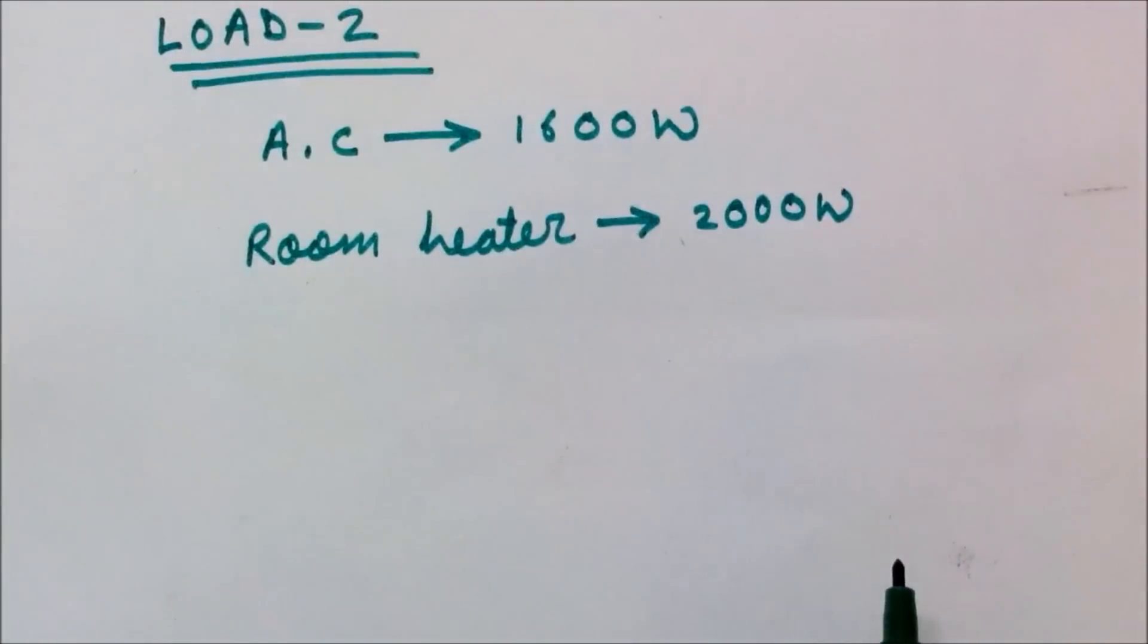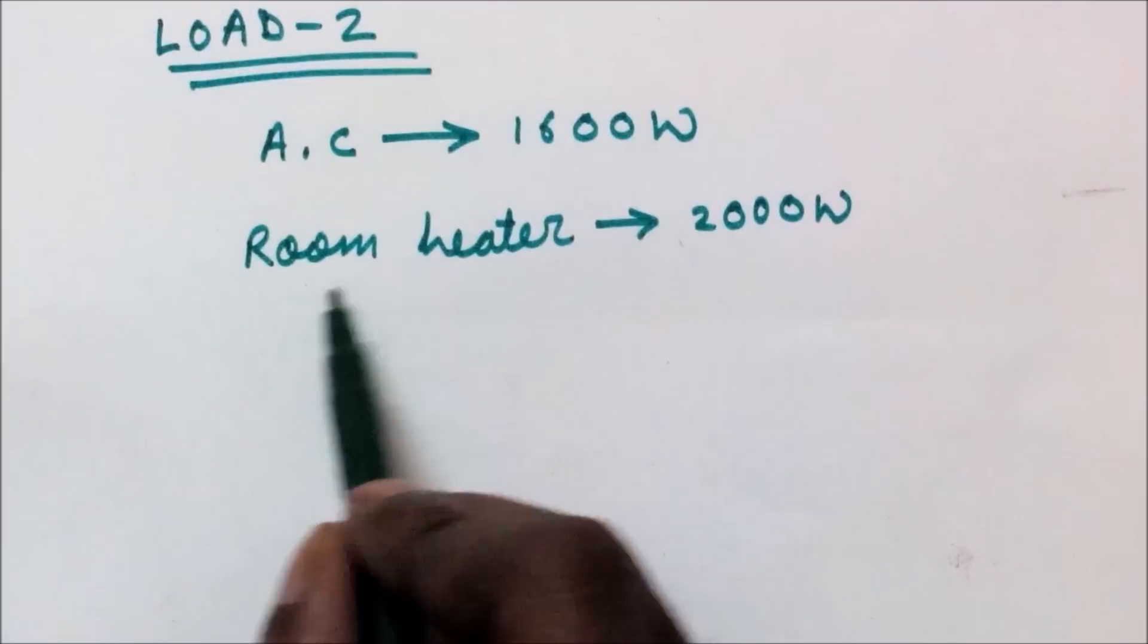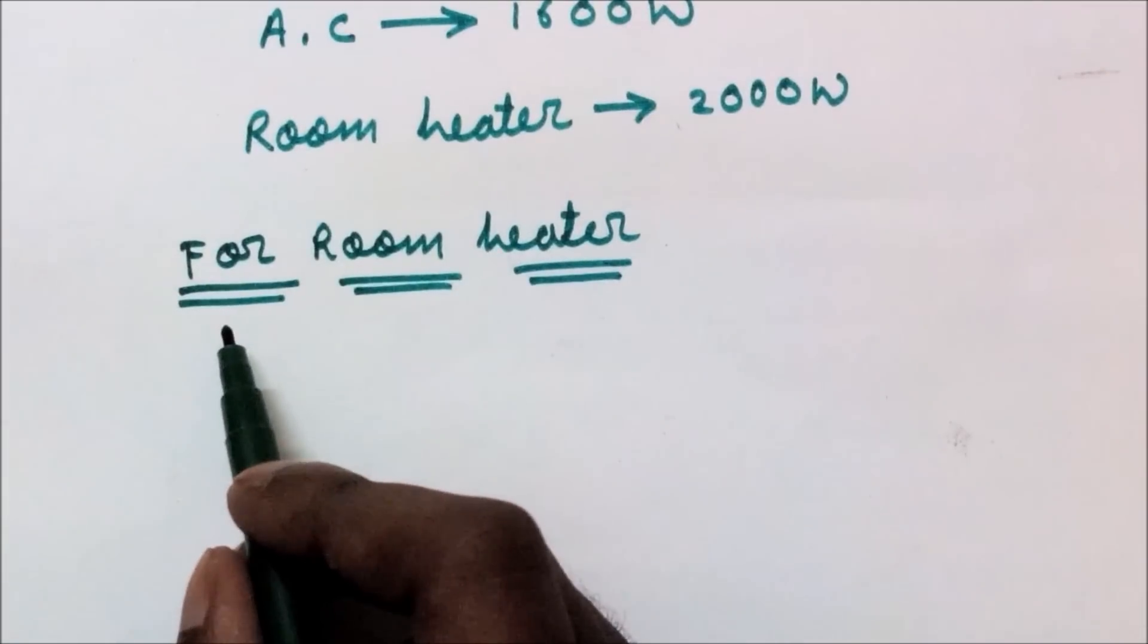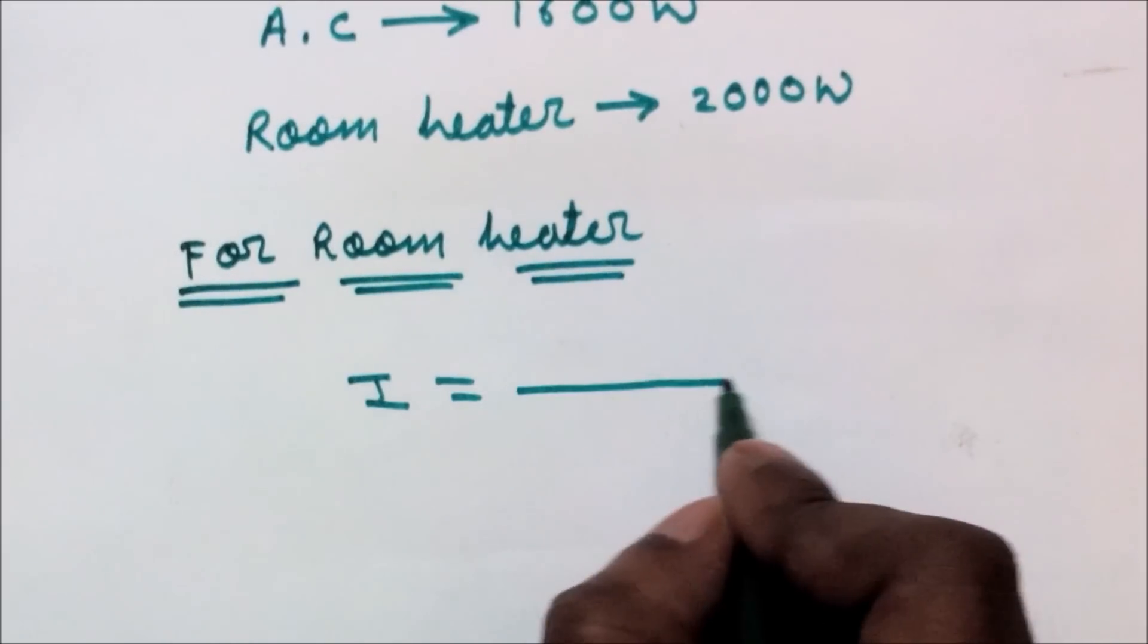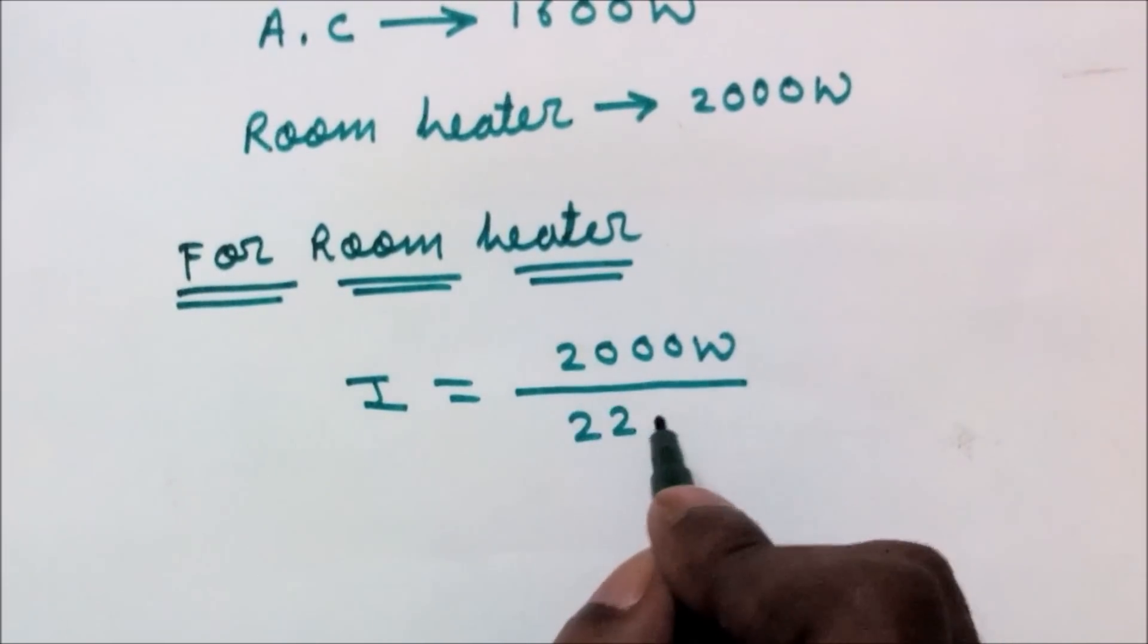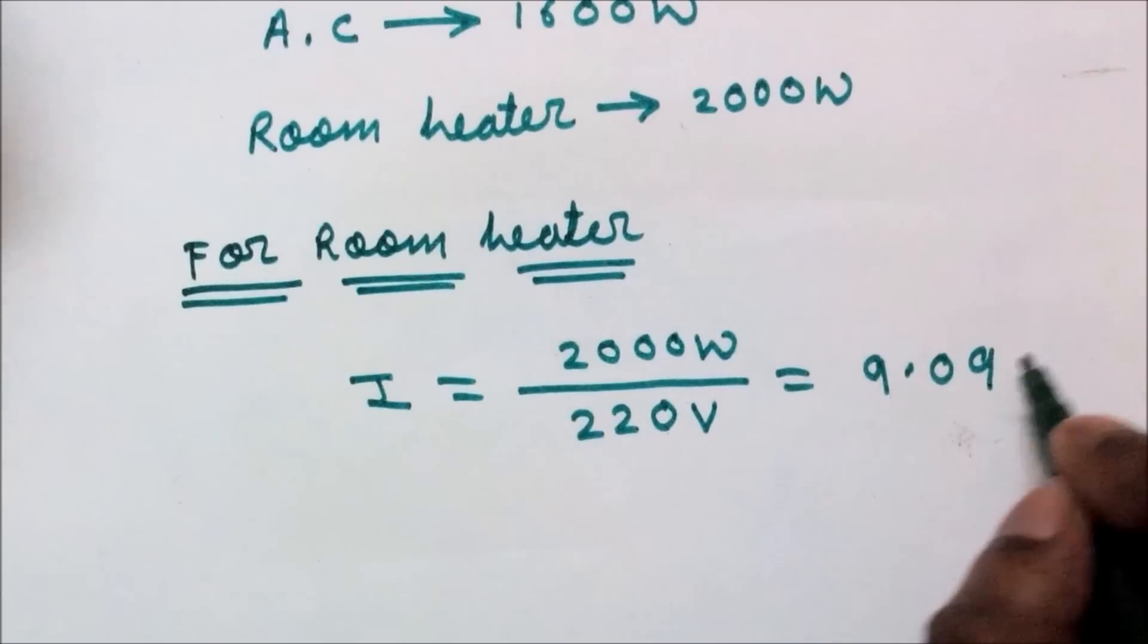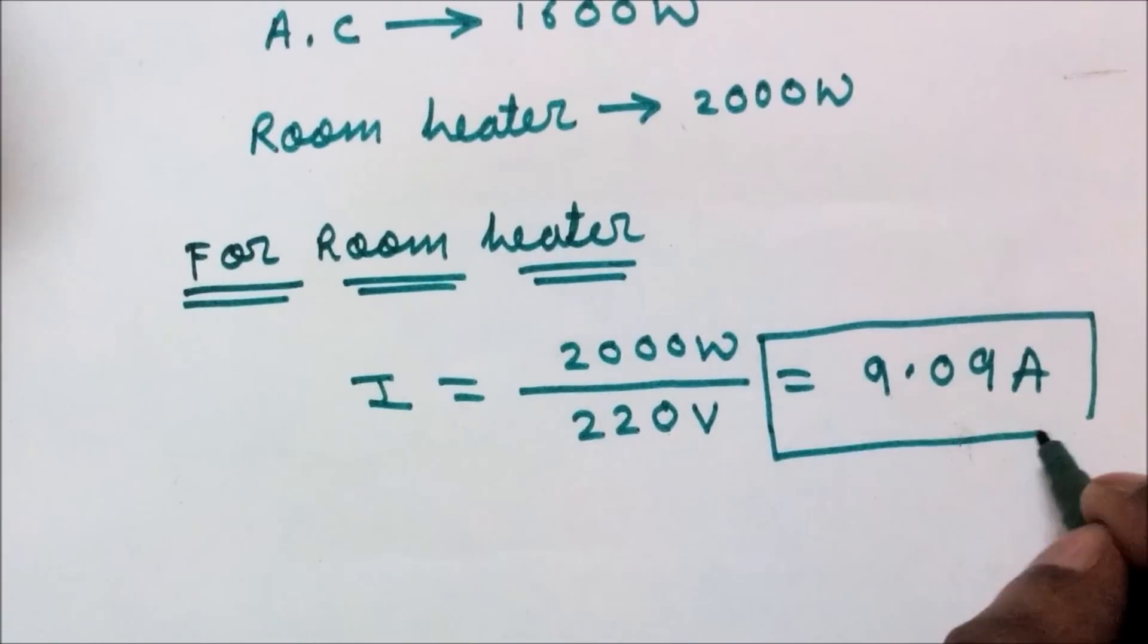Now calculation of load 2. In load 2 I consider AC 1600 watt and room heater which is 2000 watt. Now, I am going to calculate full load current of room heater: I equals 2000 watt divided by 220 volt, which gives 9.09 ampere. This is the full load current of room heater.